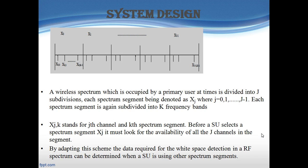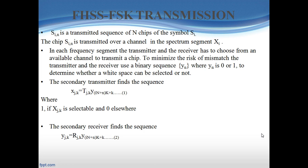Before a secondary user selects a spectrum segment X_j, it must look for the availability of all the J channels in that segment. By adapting this scheme, the data required for white space detection in the RF spectrum can be determined when a secondary user is using some other spectrum segment. S_{i,n} is a transmitted sequence of N chips of symbol S_i, where i varies from 0 to I-1, and the chip S_{i,n} is transmitted over a channel in the spectrum segment X_i.